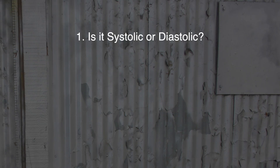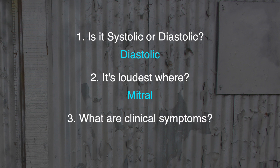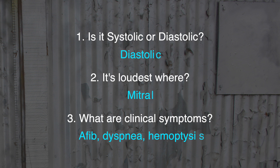Ask yourself: is it systolic or diastolic? It's diastolic. The sound is described as a low-pitched decrescendo rumbling diastolic murmur. Where do you hear it the loudest? It would be loudest in the mitral area, which is at the apex in the fifth intercostal space. What are the clinical symptoms? It can cause atrial fibrillation, dyspnea, and hemoptysis.